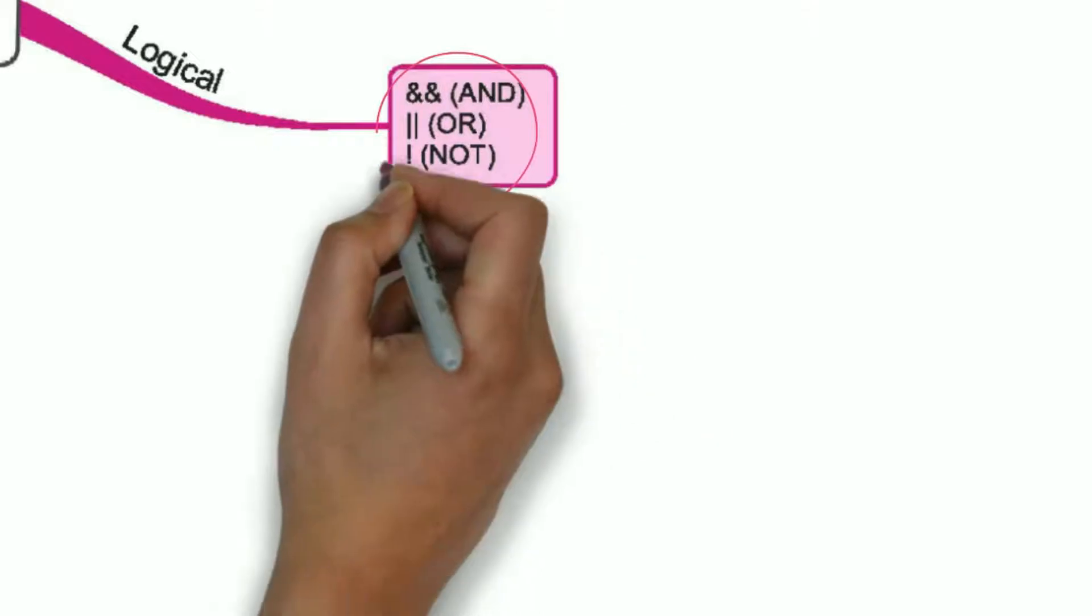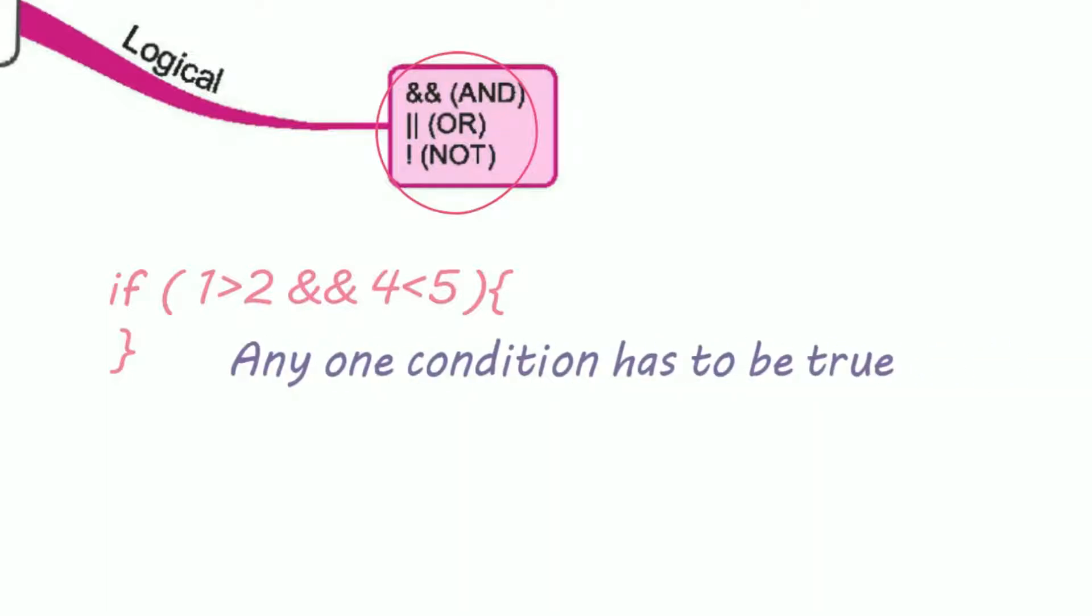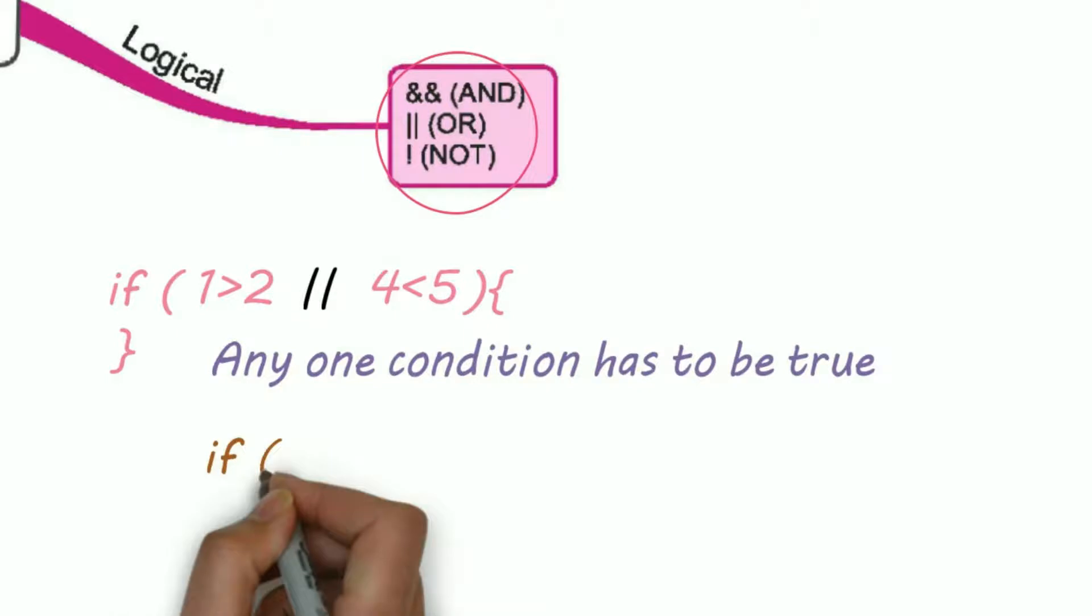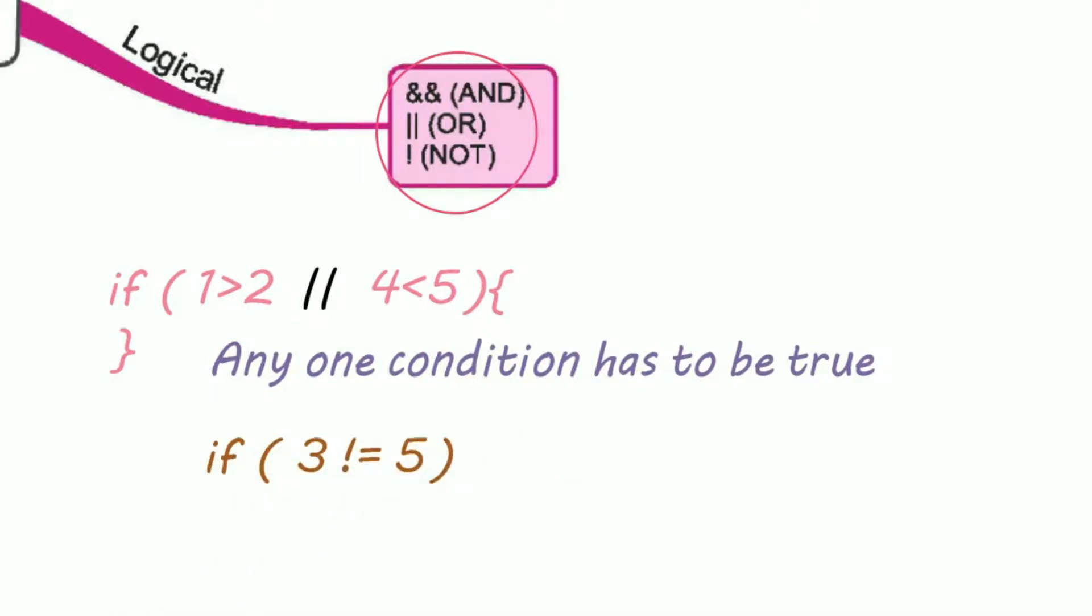We have three operators in logical. AND, OR and NOT. If we want two or more conditions to be true, we use AND. If we need only one condition has to be true, then we use OR. NOT is mostly used with equal.